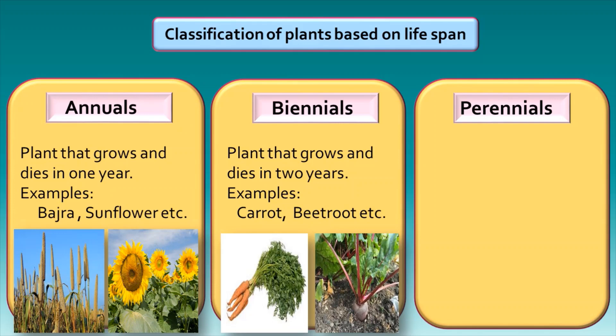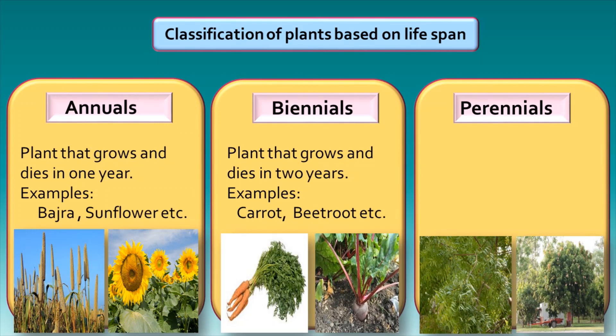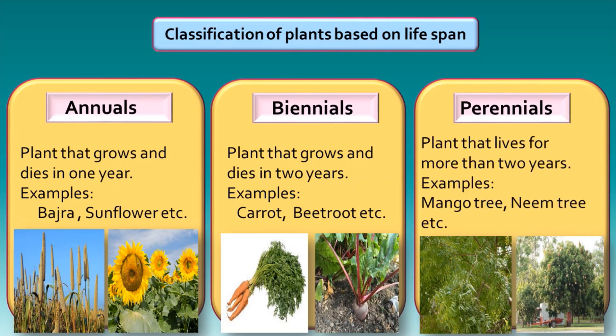Perennials: some trees like neem, mango, banyan, etc. and shrubs live for several years and bear flowers and fruits. Plants that live for more than two years are called perennials.